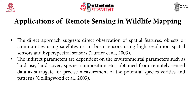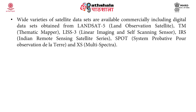The indirect parameters are dependent on environmental parameters such as land use, land cover, species composition and location, obtained from remotely sensed data as surrogates for precise measurement of potential species varieties and patterns. Wide varieties of satellite datasets are available commercially, including digital datasets obtained from Landsat 5 thematic mapper, Linear Imaging Self-Scanning sensors known as LISS-3 of the Indian Remote Sensing satellite series, SPOT (Système Probatoire d'Observation de la Terre), and multispectral data.